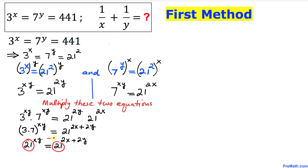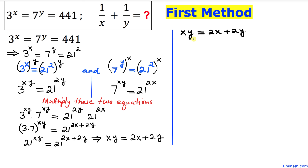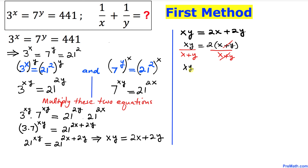Since 3 times 7 is 21, we have 21 power xy equals 21 power (2x plus 2y). Since the bases on both sides are the same, we can equate the exponents: xy equals 2x plus 2y. Factoring out 2 from the right-hand side gives xy equals 2(x plus y). Dividing both sides by (x plus y), we get xy divided by (x plus y) equals 2.